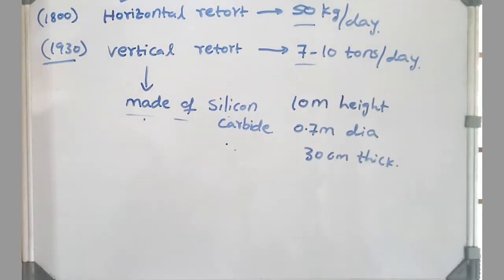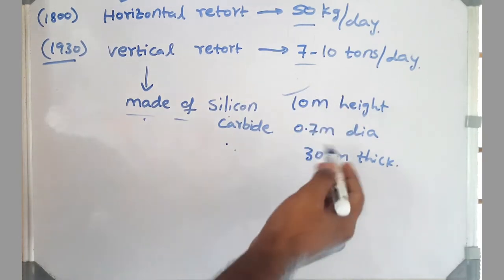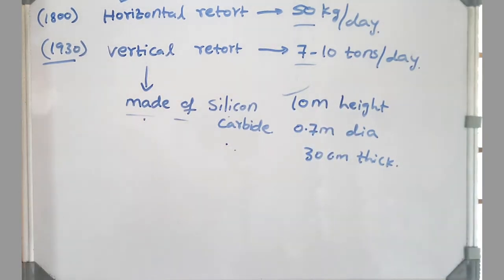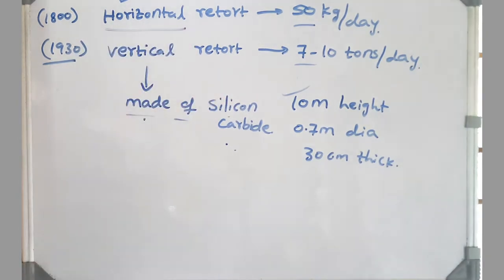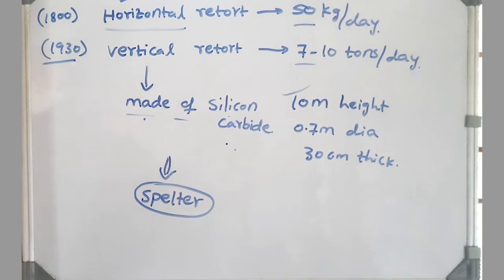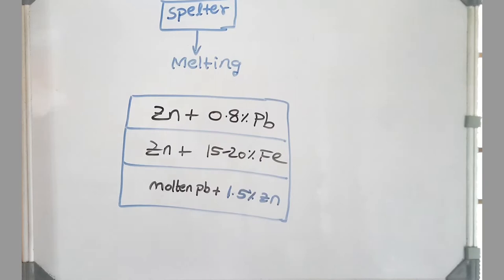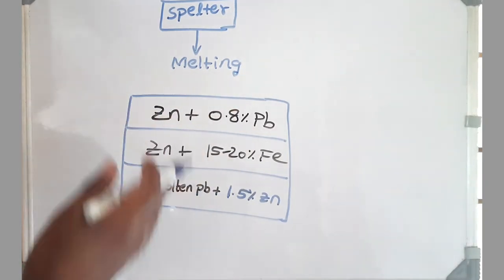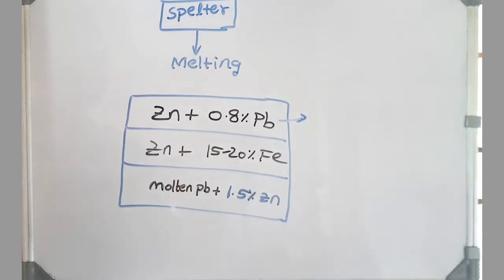The size of the vertical retort is also far greater: it is 10 meter height, 1.7 meter diameter, and 30 centimeter thick. Hence its production is far greater than that of the horizontal retort process. The product of these two processes we call spelter. It consists of mostly zinc and other elements as well. This spelter on melting produces three different layers depending on the density.